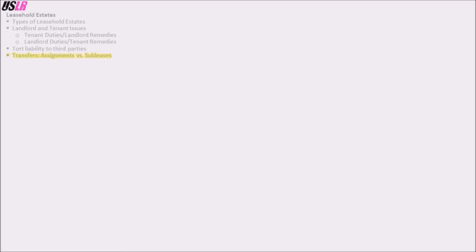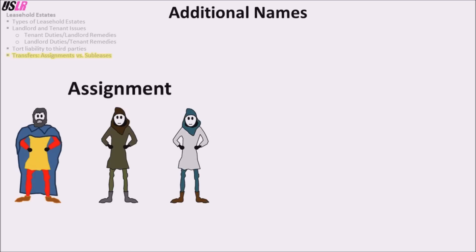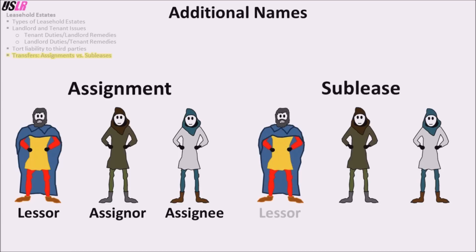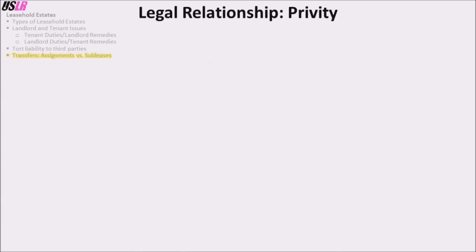To refer to the parties in a transfer, new terminology is used. In an assignment, the landlord is called the lessor, the original tenant is the assignor, and the new tenant is the assignee. In a sublease, the landlord is called the lessor, the original tenant is the sublessor, and the new tenant is the sublessee. The legal relationship can split into two forms.